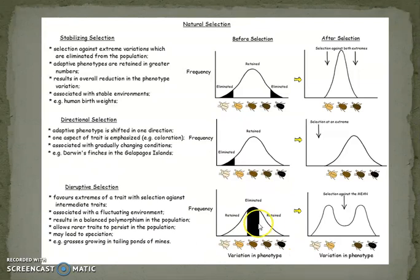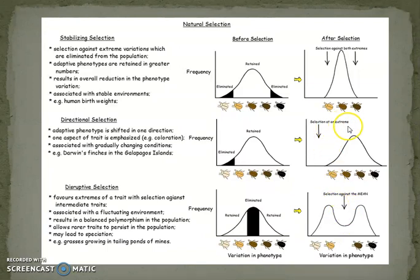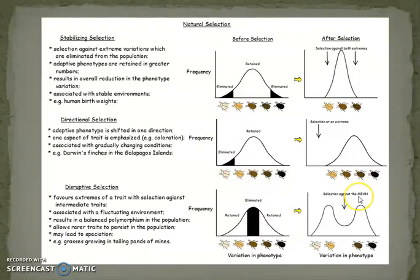Disruptive natural selection occurs when a population is subjected to divergent selection pressure in different parts of the distribution — it increases variance in the population while the mean decreases. It selects those phenotypes away from the mean. To compare the three types: in directional selection, selection operates at one extreme; in stabilizing selection, selection operates against both extremes; and in disruptive selection, selection operates against the mean.